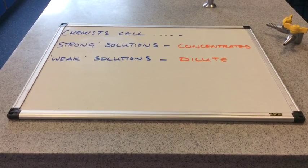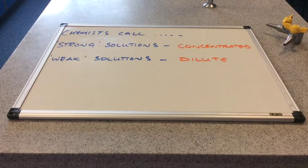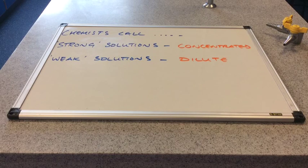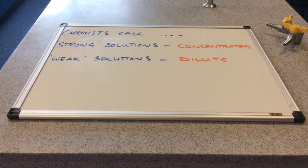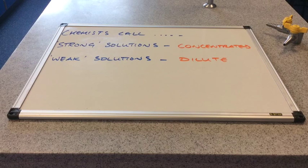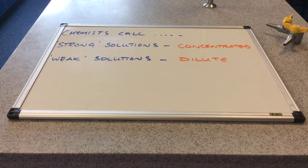A couple of key terms: chemists don't call solutions strong and weak. Chemists call strong solutions concentrated — in other words, there is a high number of moles per dm³. They call weak solutions dilute, meaning there aren't many moles per dm³ of solution.